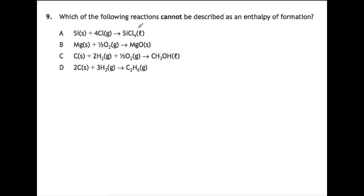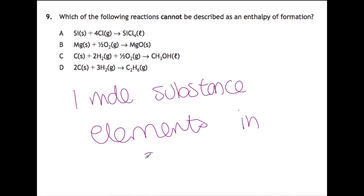Question 9: which of the following reactions cannot be described as an enthalpy of formation? An enthalpy of formation is the formation of one mole of a substance from its elements in standard states. If we have a look at all the answers, we are producing one mole of each of them. So then we have to have a look at what is being used to produce them. Silicon would be a solid at room temperature, but chlorine, although it would be a gas, would not exist as atoms. So this is not being made from elements in its standard states. So A is our answer.